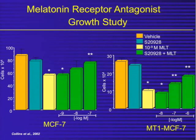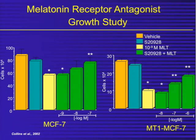This slide represents a lot of work by my laboratory over a number of years. It shows that when we take human breast cancer cells, grow them in culture, and treat them with nanomolar, physiologic concentrations of melatonin, we can modestly — sometimes very dramatically — suppress the proliferation and growth of human breast cancer cells in culture. And if we use antagonists to melatonin, S20928, we can block melatonin's growth inhibitory effects.